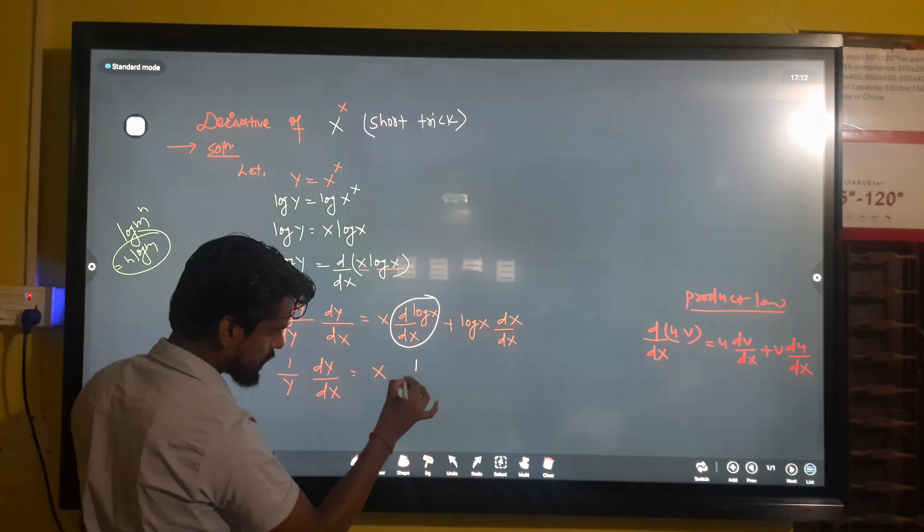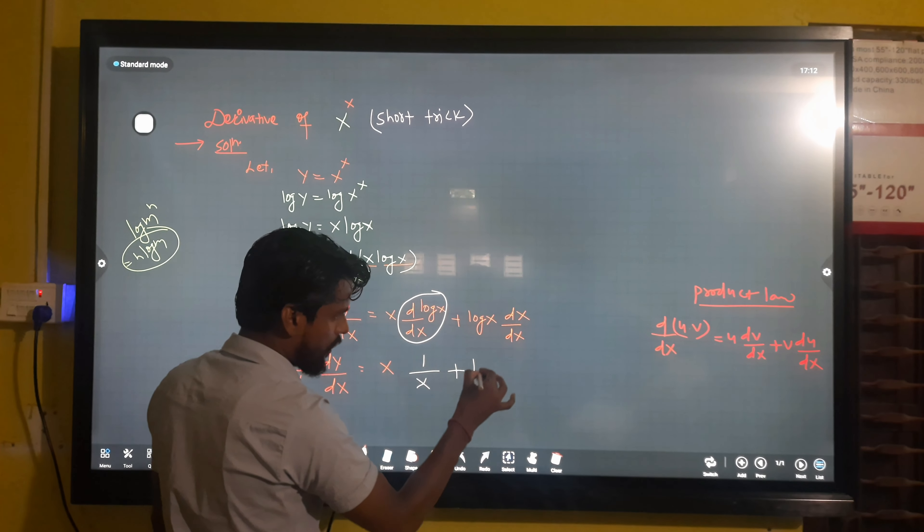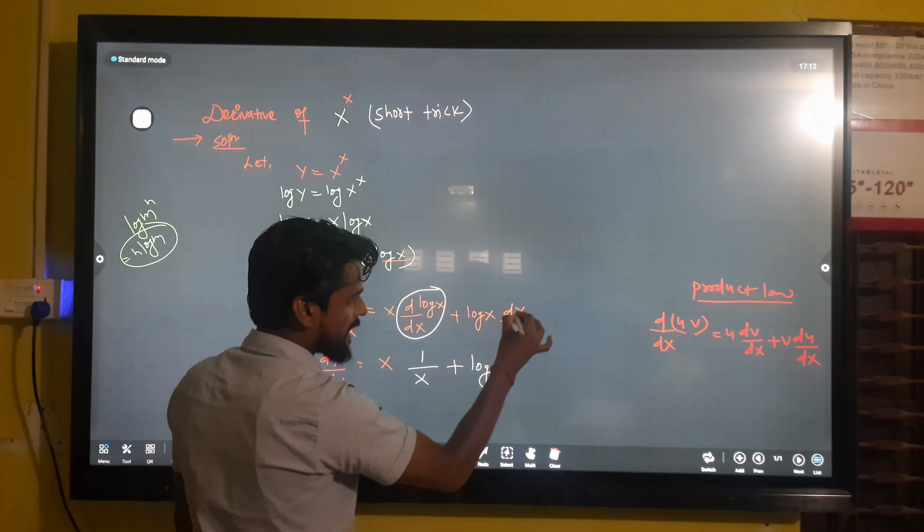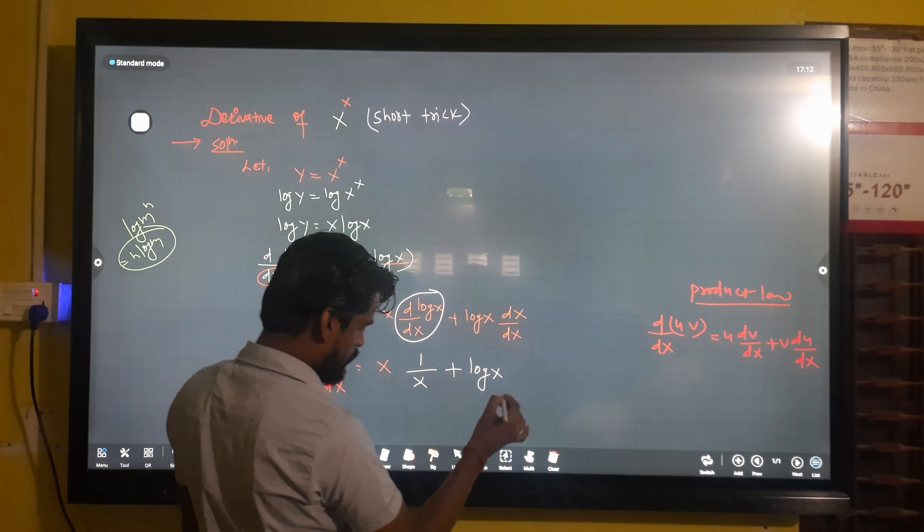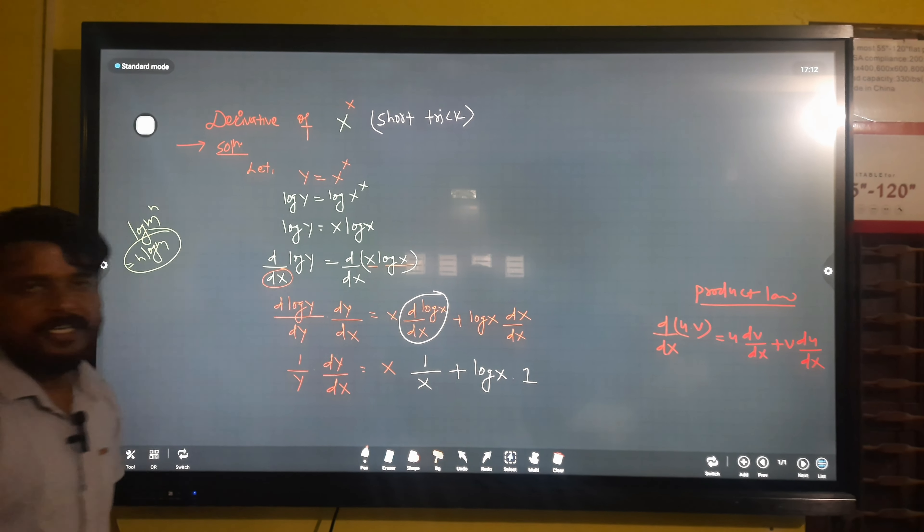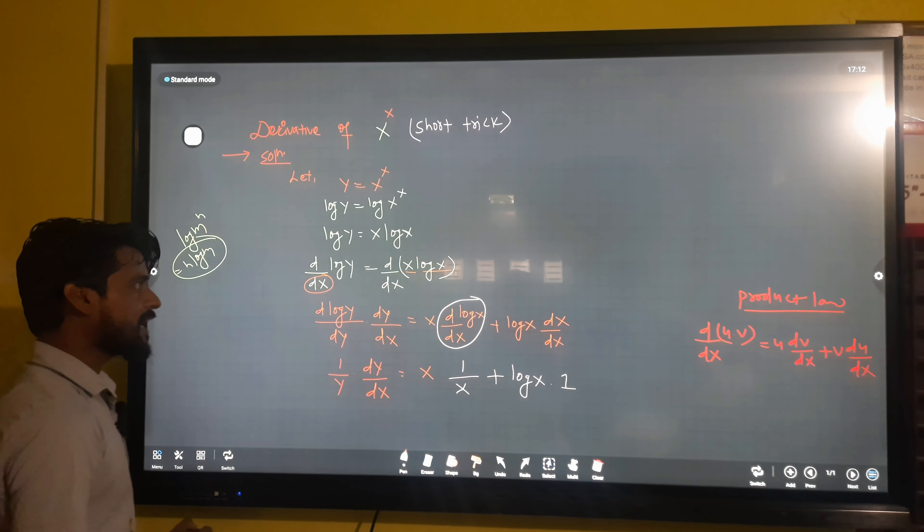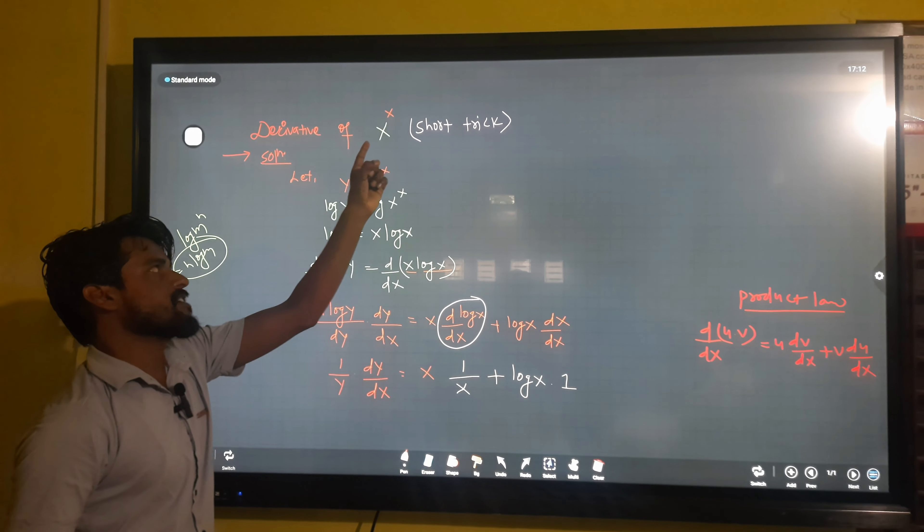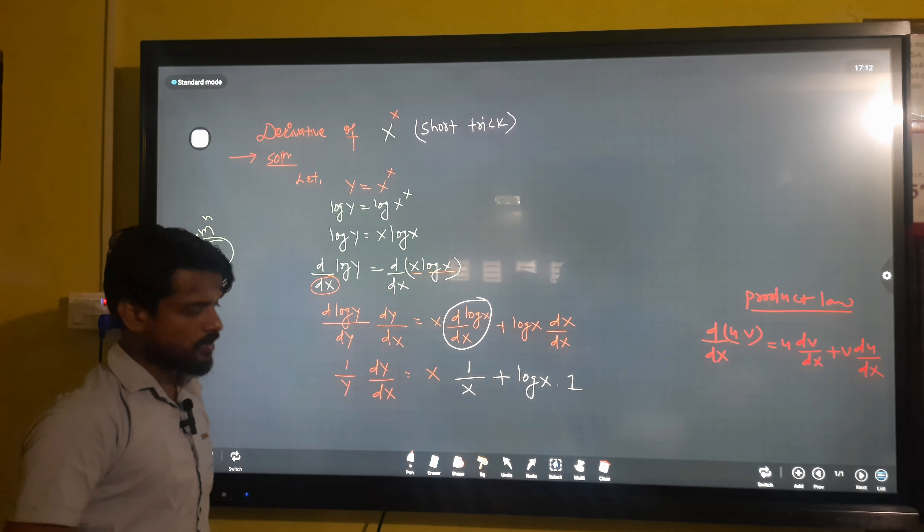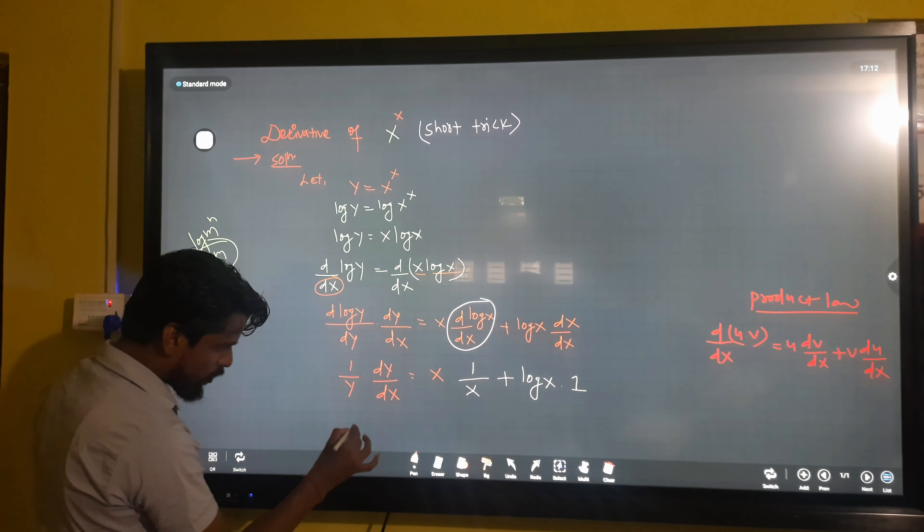One by x plus log x. The derivative of x is one, so the derivative of x is one. Now we need to find dy by dx.